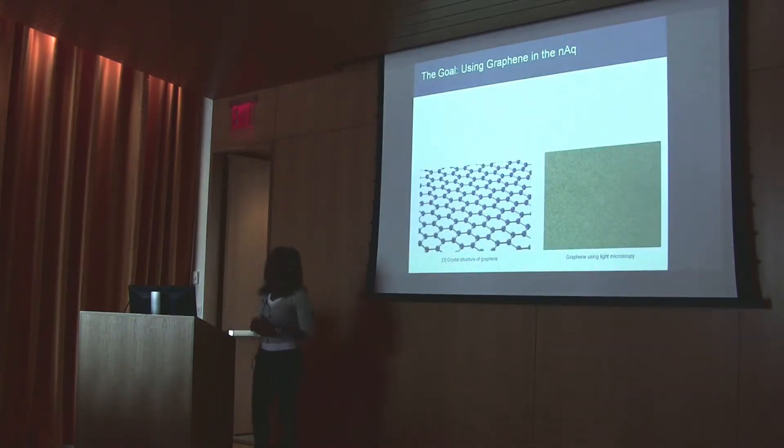Our goal for this summer was to take the silicon nitride membrane and replace it with graphene. We wanted to use graphene because it is the thinnest and strongest membrane. It has a single atom thick layer and about 130 gigapascals of ultimate tensile strength. The thickness was so thin it would allow a better resolution using the TEM.